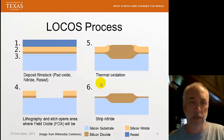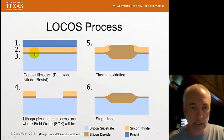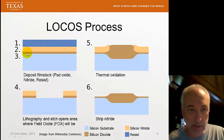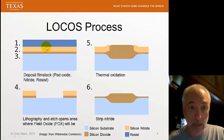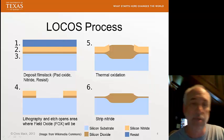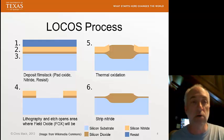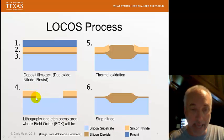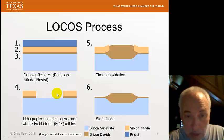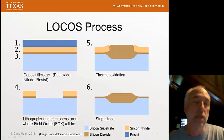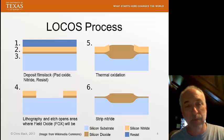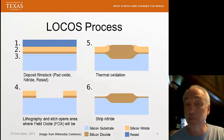Let's look at the LOCOS process. Here are the basic steps. First, I'm going to deposit a pad oxide. Then I'll put a silicon nitride layer and then a photoresist layer — so this film stack is created. I'll explain the purpose of each layer as we go. The photoresist will be used in our lithography process to pattern a feature. We'll expose and develop and etch to create an etched region, leaving silicon dioxide with silicon nitride on top of it. I open up a region where we're going to build our field oxide — our isolating oxide between the devices. Where the pad oxide and silicon nitride remain, those will be our active areas.